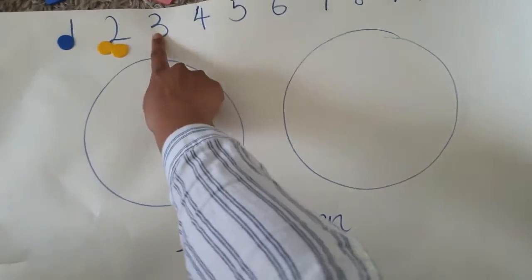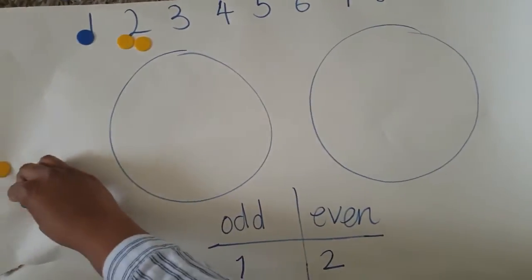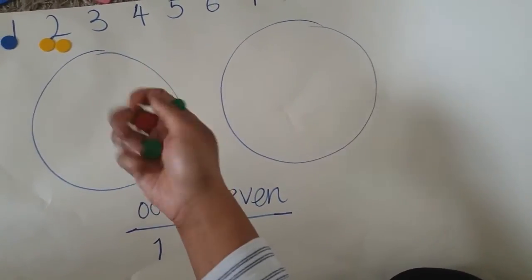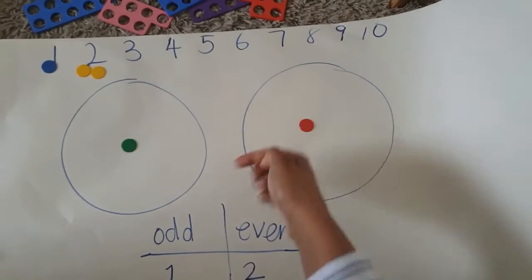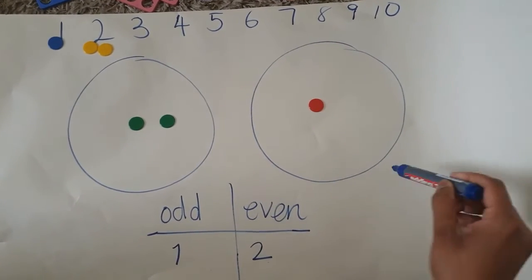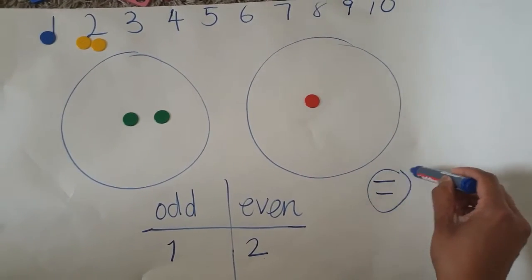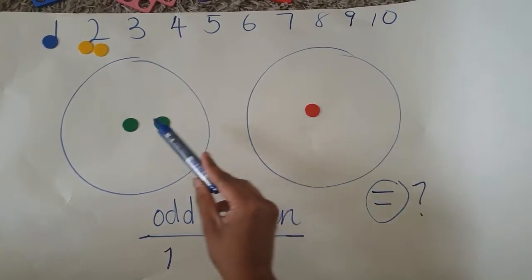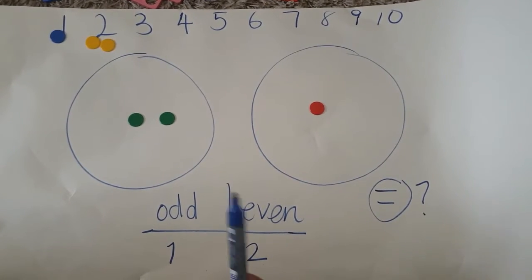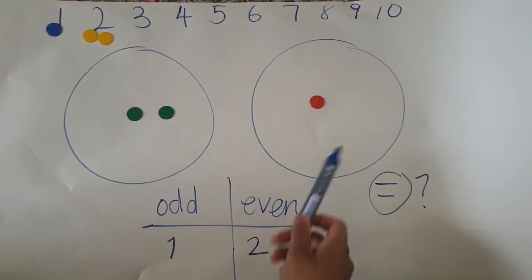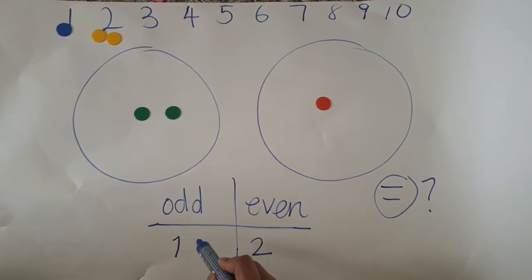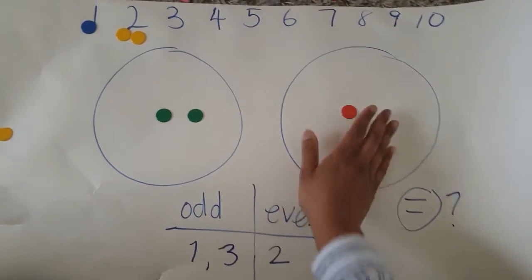Now, let's try the number three. Ready? One for you. I've got three here. Three counters in my hand. One for you, one for you, and one for you. Are the groups equal? No, there's two here and there's one here. So therefore, is three an odd or an even number? Well done. It is certainly an odd number. So three needs to go there.